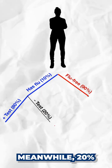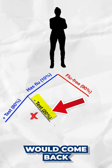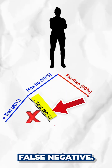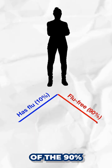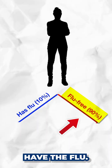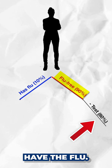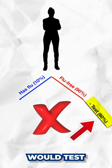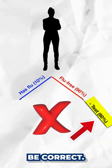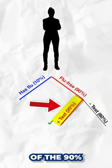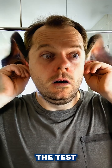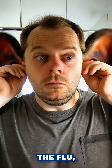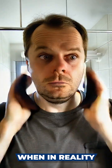Meanwhile, 20% would come back with a negative test result — that's a false negative, which would be incorrect. On the other branch of the tree, of the 90% who truly don't have the flu, 80% of them would test negative and that would be correct. But 20% of the 90% would get a false positive, meaning the test would say they had the flu when in reality they don't.